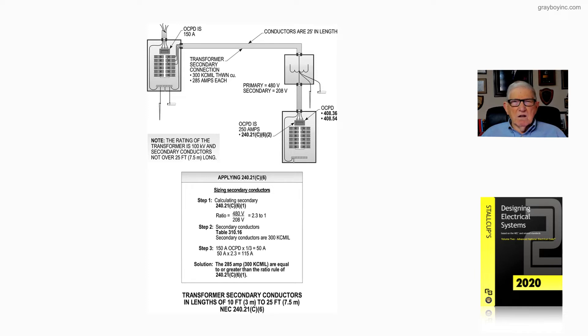You know, there was always a conflict between 240.21C3 because it said industrial. So a lot of cities, states, and counties said, well, you have to be in industrial-type zoning to make this 25-foot tap. You have to make a 10. So we needed to do something for commercial areas where a tap rule could be made over 10 foot up to 25. So the code panel came up with 240.21C6.